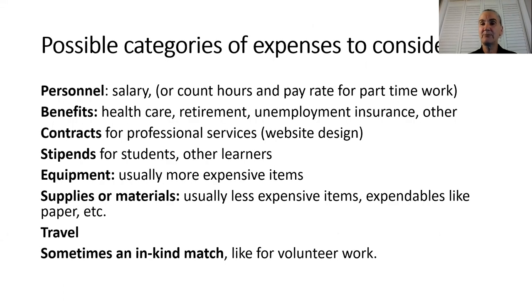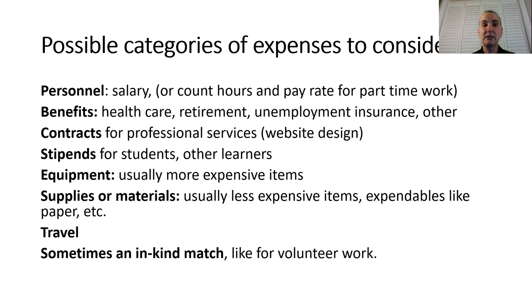Here are some possible categories of expenses to consider for your budget. You might need to involve people and pay them for their work — this might be a salary, or count the hours and pay rate for part-time work. You might need to consider benefits like health care, retirement, and unemployment insurance. You may need to put out contracts for professional services like website design. You might also want to pay stipends to students or other learners, such as workshop participants.